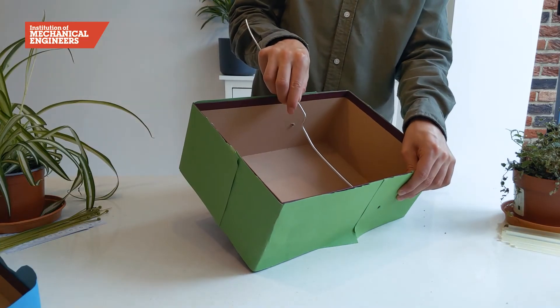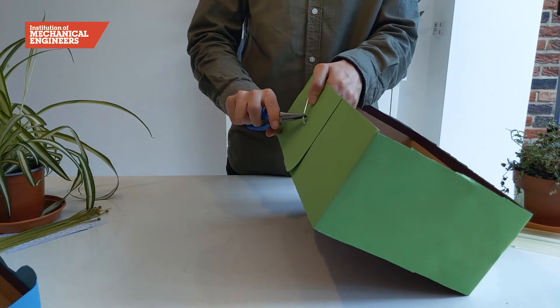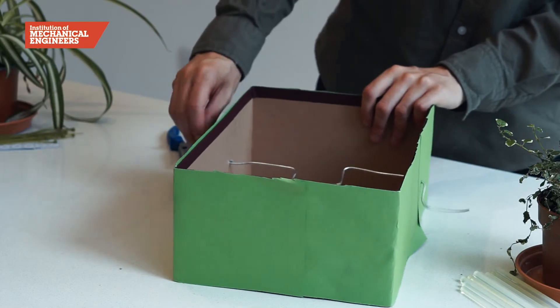Now slide the crank the rest of the way through the box and bend the wire twice to create a handle shape. This will automatically stop the crank from slipping back through the hole.